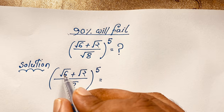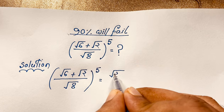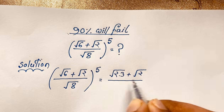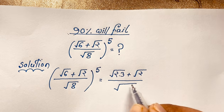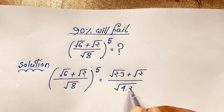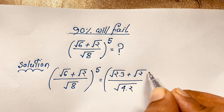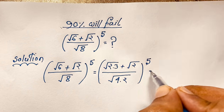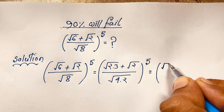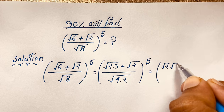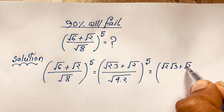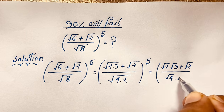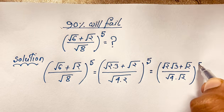At this moment, we can simplify: square root of 6 is square root of 2 times 3, plus square root of 2, then square root of 8 is square root of 4 times 2, all in brackets to the power 5.